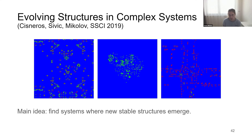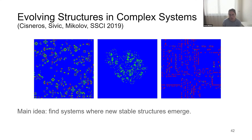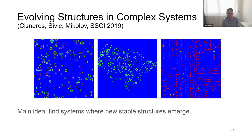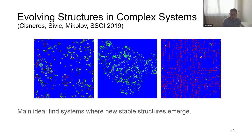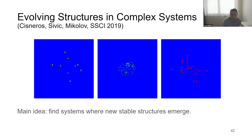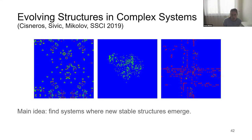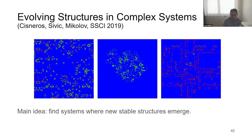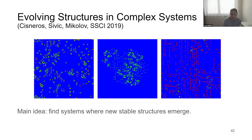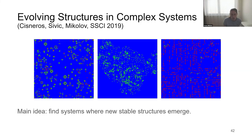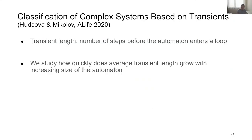Systems with the highest complexity under our metric are those with glider-like structures emerging spontaneously — similar to Game of Life but found algorithmically rather than designed by hand. We could find many systems with diverse behaviors by sampling many systems and picking those with the highest growth of complexity over time. We also took a more mathematical approach, looking at how quickly transients grow — the time a system takes before entering a loop — with the size of the automaton.